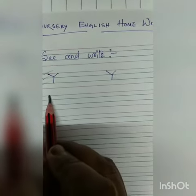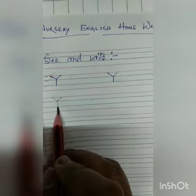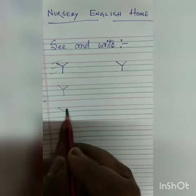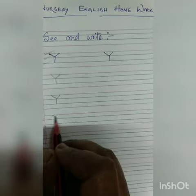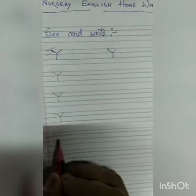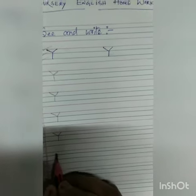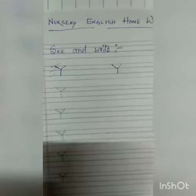You just have to follow three lines, like this — capital letter Y, capital letter Y. Y is for yak, Y is for yarn, Y is for yo-yo, Y is for York.